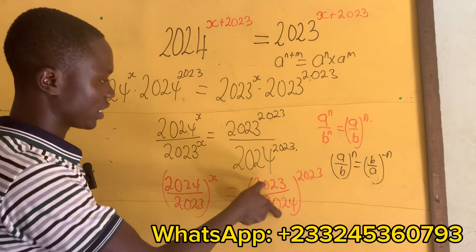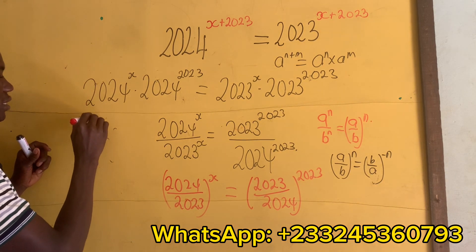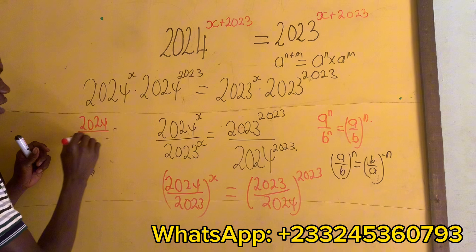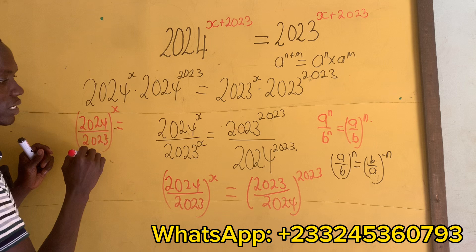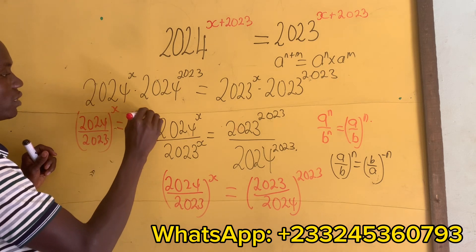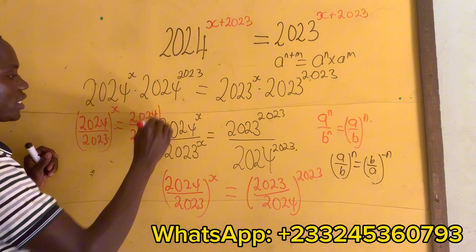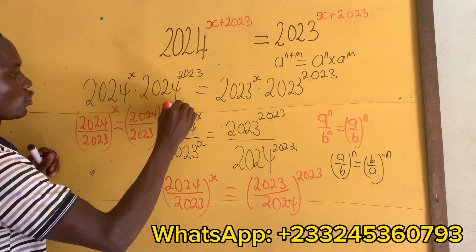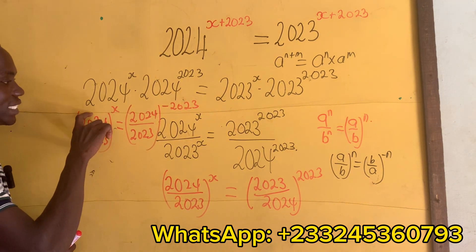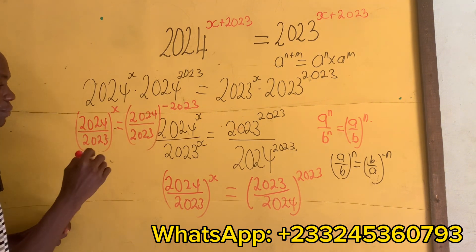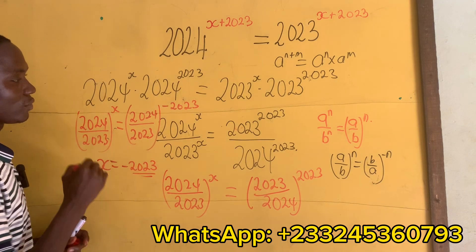Here we're going to pick one of them and change it. So we'll have 2024 divided by 2023 to the exponent positive x, equals 2024 divided by 2023 to the exponent negative 2023. You can see that what is inside here is the same as what's inside there, which means that x equals negative 2023.